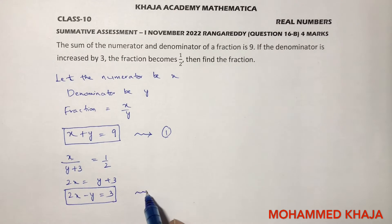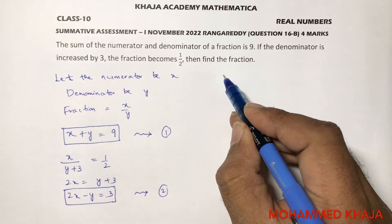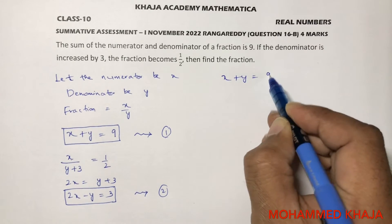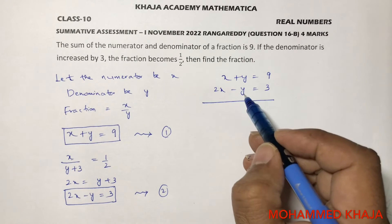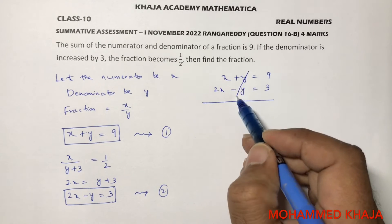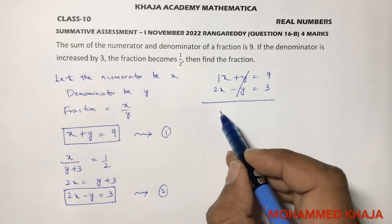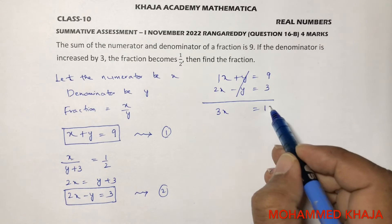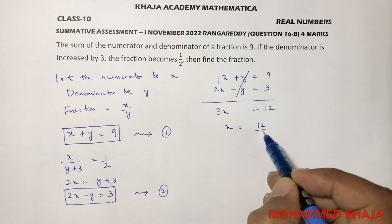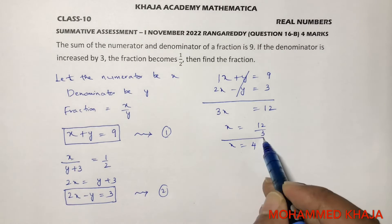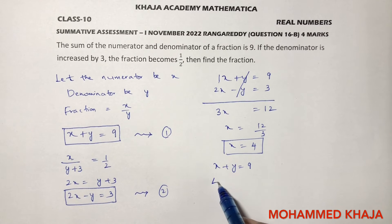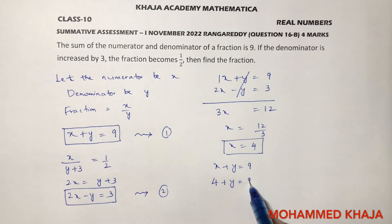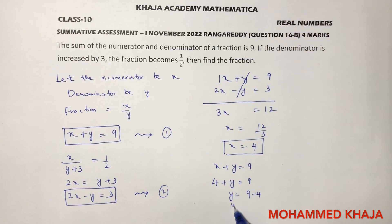Now I will solve both equations by elimination. We have x plus y equals 9 and 2x minus y equals 3. The y terms have opposite signs so they cancel when added. Adding both equations: 3x equals 12, so x equals 4. Substituting x equals 4 into x plus y equals 9 gives y equals 5.